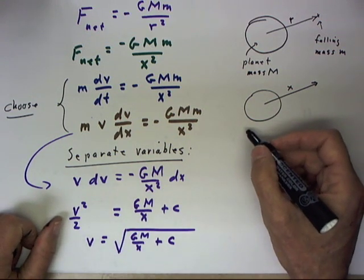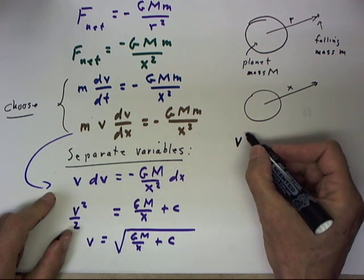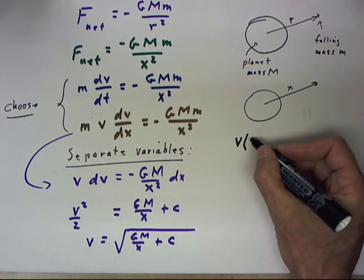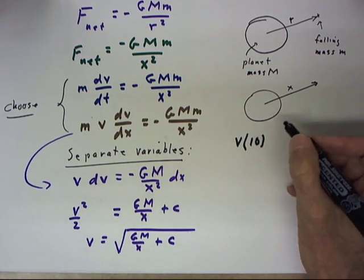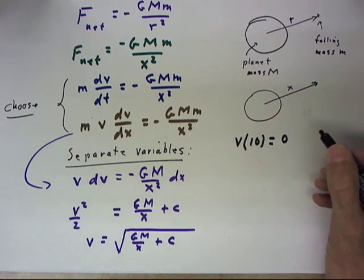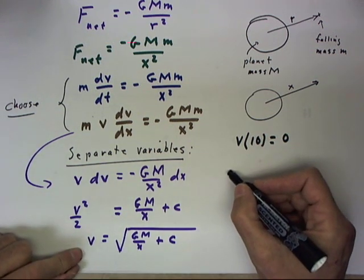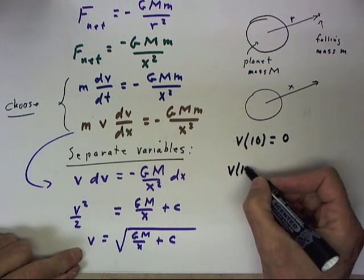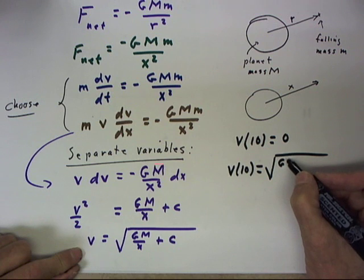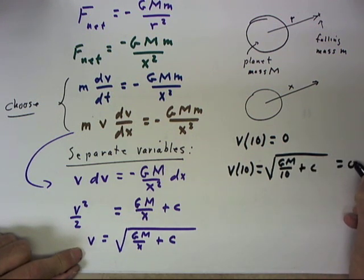If we put an initial condition on this, the condition that V at 10 equals 0, then we have V of 10 equals the square root of GM over 10 plus C, and that should be 0.